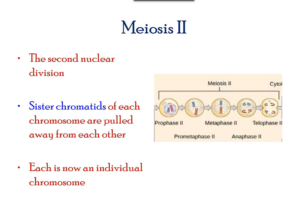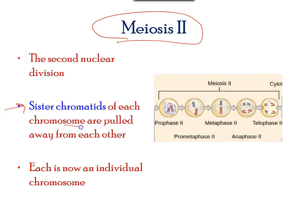In the second nuclear division, called meiosis II, the sister chromatids of each chromosome will be separated from each other. Meiosis II is similar to what we learned in mitosis.